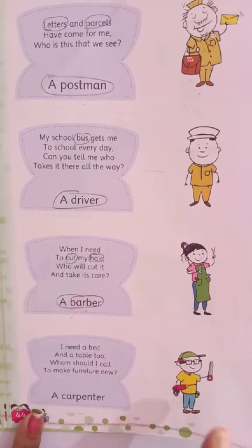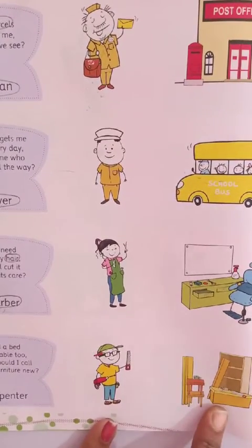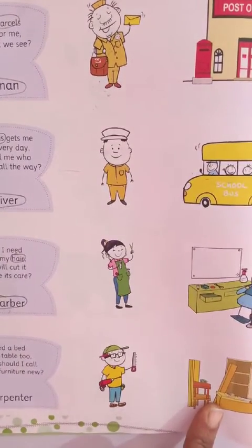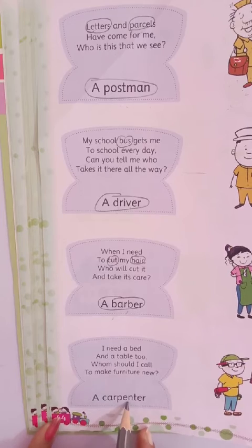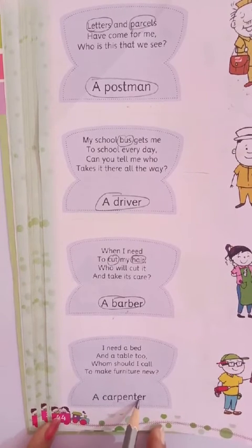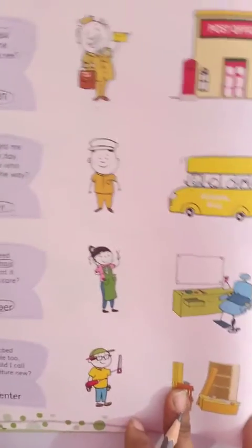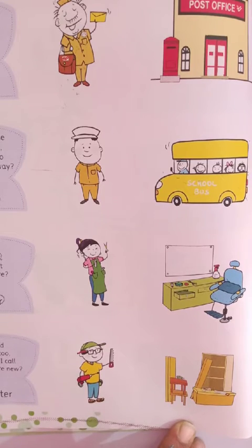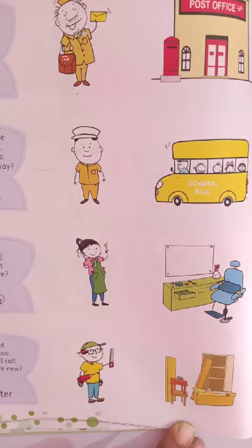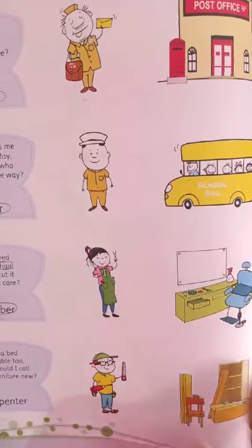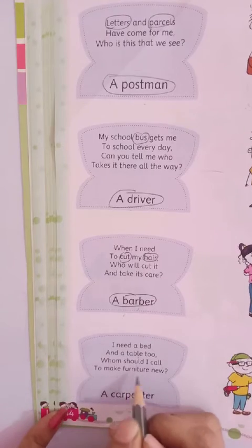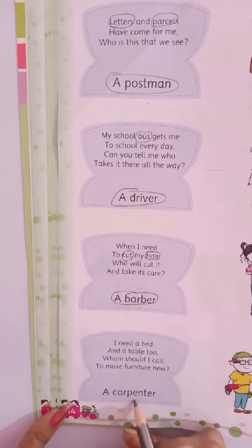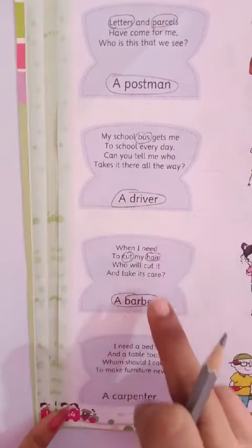Okay, uske baad — aapka jo ghar hai, usmein aapne lakdi ka furniture, wood furniture — vo furniture kaun banata hai? A carpenter. Dekho, teen naam ismein hain: C-A-R — car, P-E-N — pen, T-E-R — ter. Carpenter. Aapke ghar ka furniture banata hai — jaise ki aapke ghar mein bed hai, dressing table hai, dining table hai, chair hai, aur aapka study table hai — vo saari cheezein kaun banata hai? Carpenter. I need a bed and a table — whom should I call to make furniture? Carpenter. So the helpers on this page are: postman, driver, barber, carpenter.